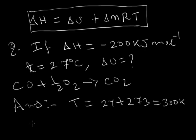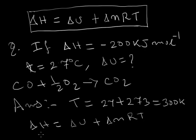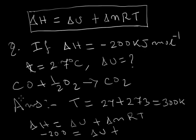We write the equation: delta H equals delta U plus delta N times R times T. Delta H is minus 200. Delta N is the number of moles of products minus number of moles of reactants. Here the number of moles of product is 1 and number of moles of reactants is 1 plus half, so delta N is 1 minus 1.5, which equals minus half.